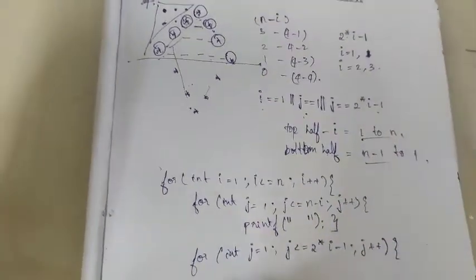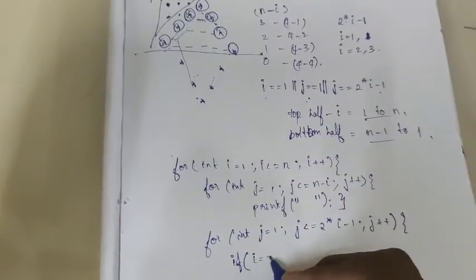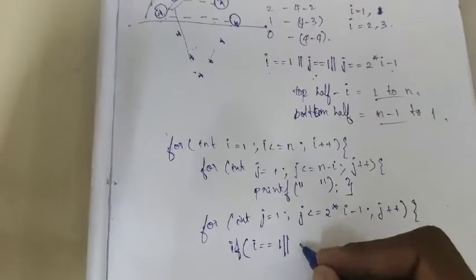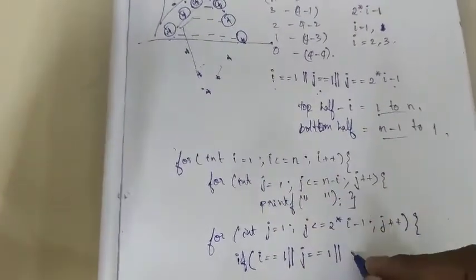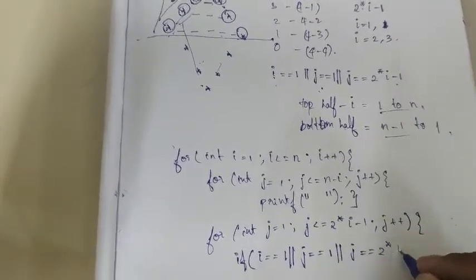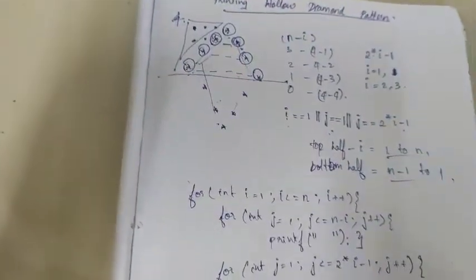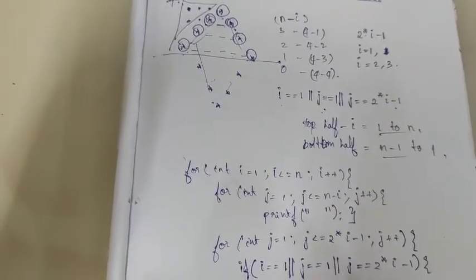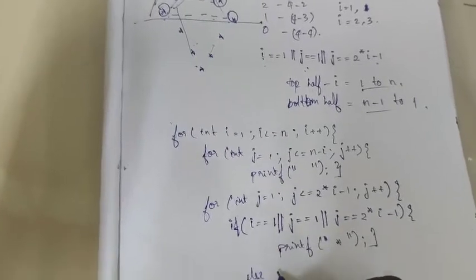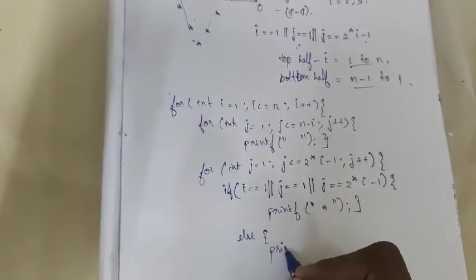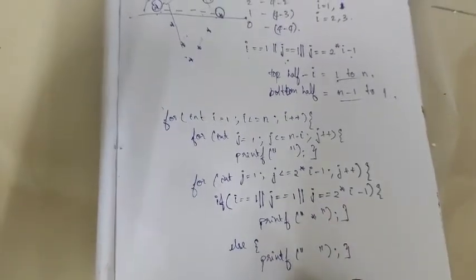For our convenience, I am going to give an if statement. If i is equal to 1 — in the first row alone — and j is equal to 1 — in the first column alone — and j is equal to 2 star i minus 1 — along the remaining stars — I am going to print a star. And else, I am going to print a blank space.